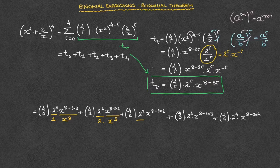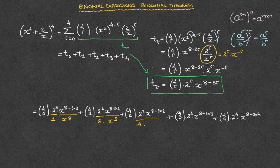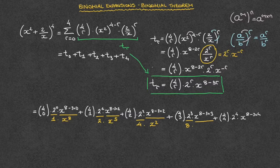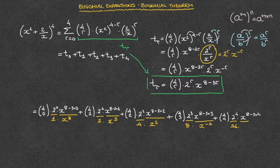In the next term, we have 2 to the power of 2, which is 4, and that multiplies x raised to the power of 8 minus 3 times 2. So that's x to the power of 8 minus 6, which is x raised to the power of 2. In the next term, we have 2 to the power of 3, which is equal to 8, and that multiplies x raised to the power of 8 minus 3 times 3. So that's 8 minus 9 — that's x raised to the power of negative 1. Finally, for the last term, we have 2 to the power of 4, which is 16, and that multiplies x raised to the power of 8 minus 3 times 4. So that's 8 minus 12, which is x raised to the power of negative 4.